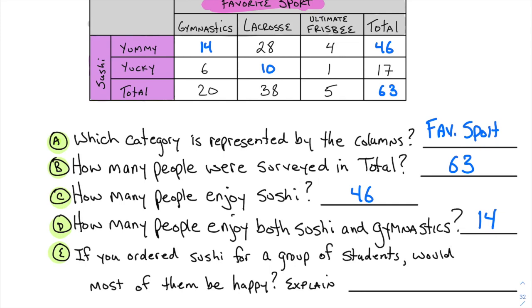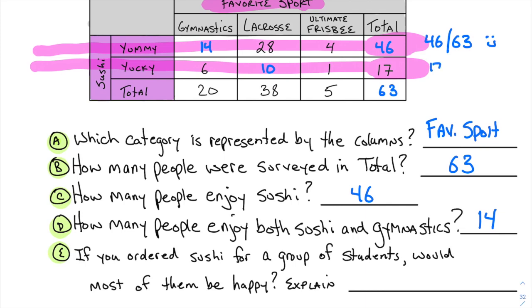If you ordered sushi for a group of students - a student council event, homeroom celebration, whatever - would most of them be happy? Let's find out if most students like sushi. Notice it doesn't say anything about sports, so we ignore the sports part. We see that 46 out of 63 people would be happy and 17 out of 63 would be sad.